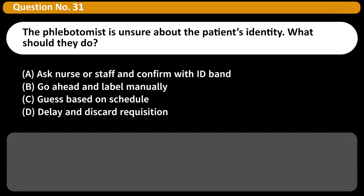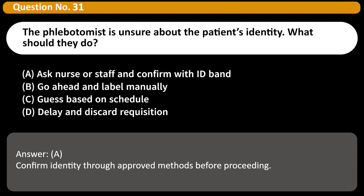The phlebotomist is unsure about the patient's identity. What should they do? A. Ask nurse or staff and confirm with ID band. B. Go ahead and label manually. C. Guess based on schedule. D. Delay and discard requisition. Answer: A. Confirm identity through approved methods before proceeding.